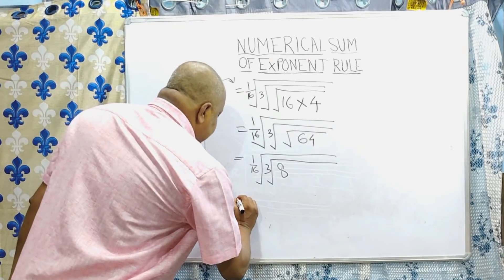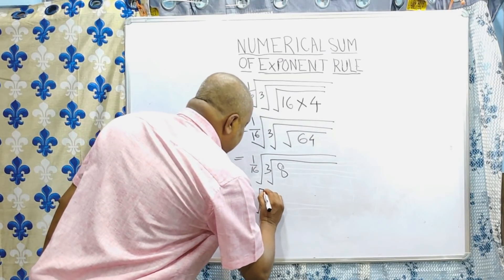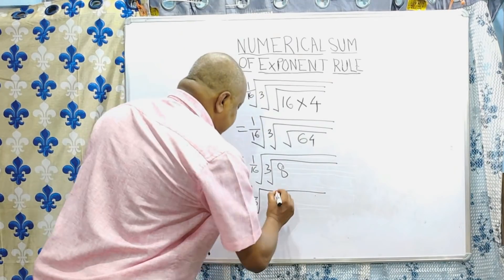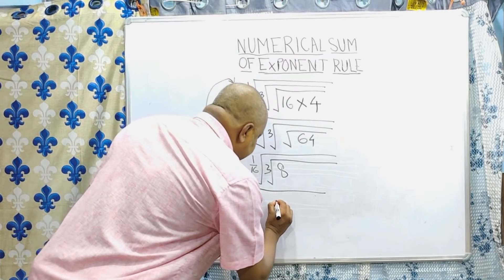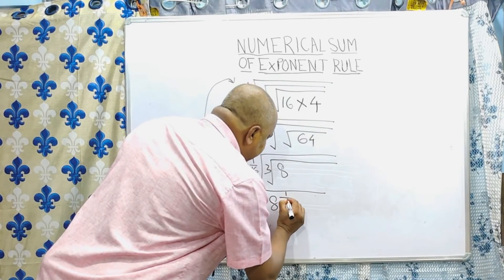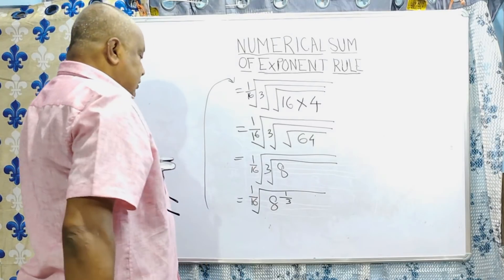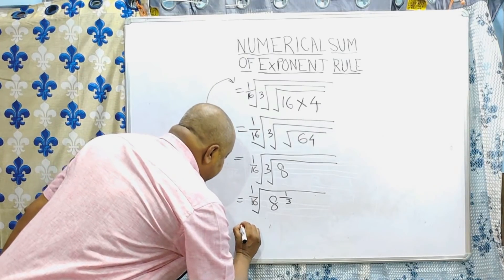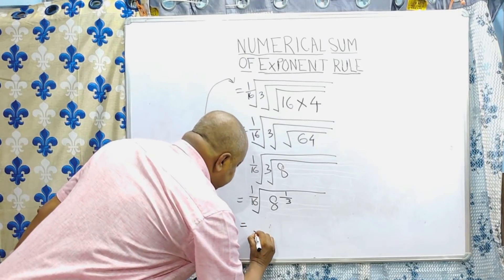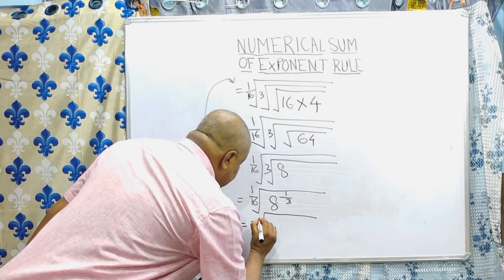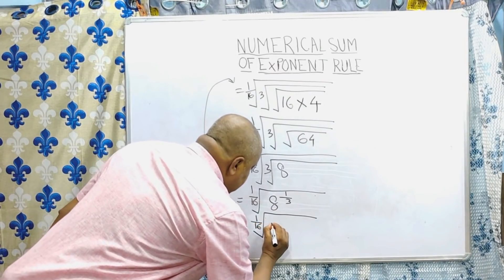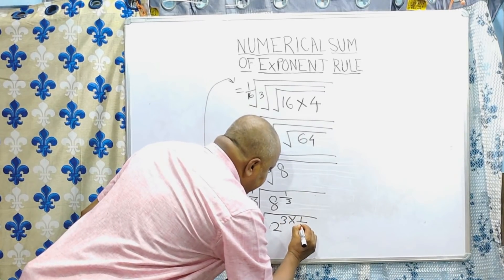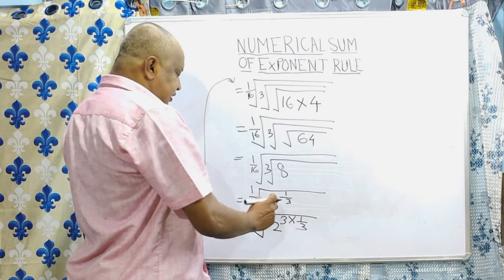Now in the next step, root over 1 by 16 remains as it is. This is equal to 8 to the power 1 by 3. Now you can write — we can write — 8 to the power 1 by 3 in this format: 1 by 16, 2 to the power 3, into 1 by 3. It can be written as 2 to the power 3. So the 3 and 3 cancel, giving 1 by 3.